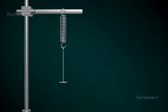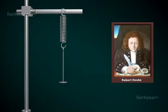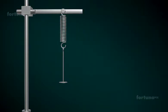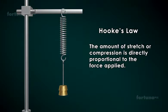There is a relationship between elasticity and force. This relationship was proposed by British physicist Robert Hooke in 1678, and it became known as Hooke's Law. Hooke's Law states that the amount of stretch, or compression, is directly proportional to the force applied.